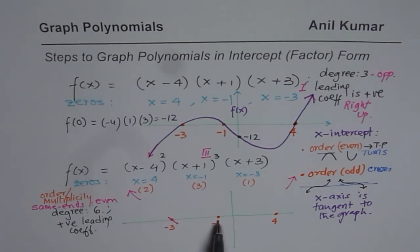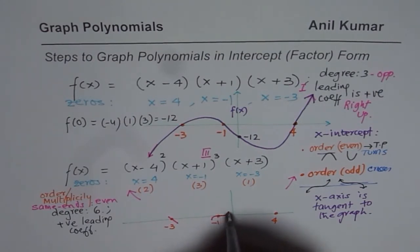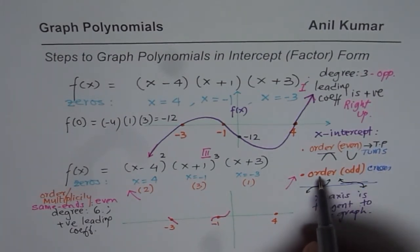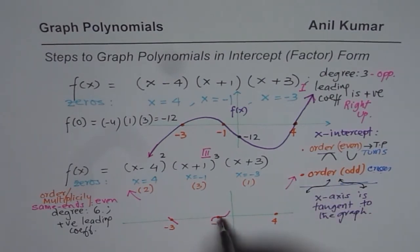the x-intercept at minus 1 is of multiplicity 3, it is cube. So it will go like a cube. Since we are on this side, coordinate 3, it will go like this. Do you see that? x-axis is tangent and we have crossed the x-axis. That is what I am saying. x-axis is tangent to the graph and you cross when the order is odd. 3 is odd. Perfect.